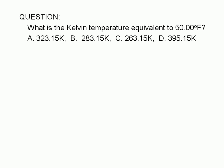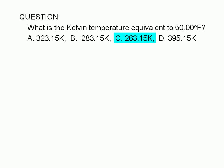What is the Kelvin temperature equivalent to 50.00 degrees Fahrenheit? A. 323.15 Kelvin. B. 283.15 Kelvin. C. 263.15 Kelvin. Or D. 395.15 Kelvin.